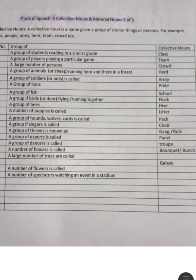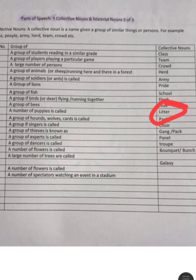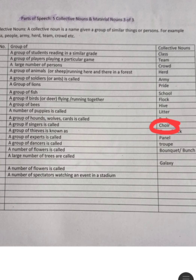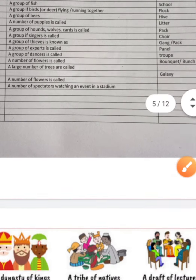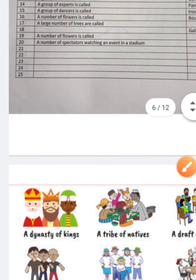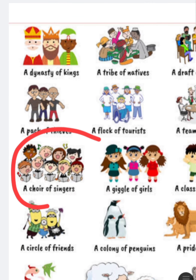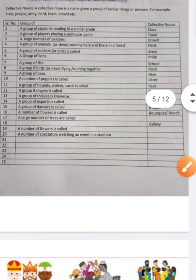A group of bees is called a hive. A group of puppies is called a litter — the young ones of a dog. A group of hounds, wolves, or cats is called a pack. A group of singers is called a choir.